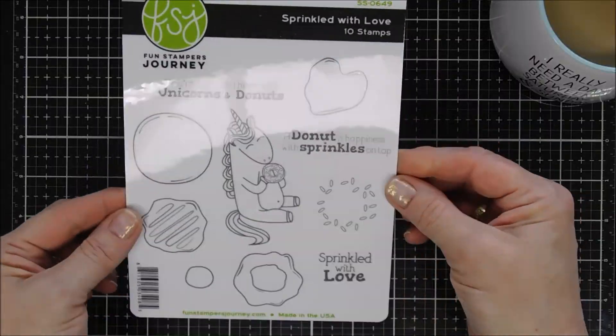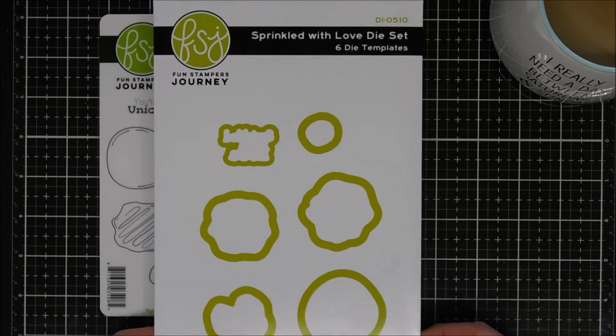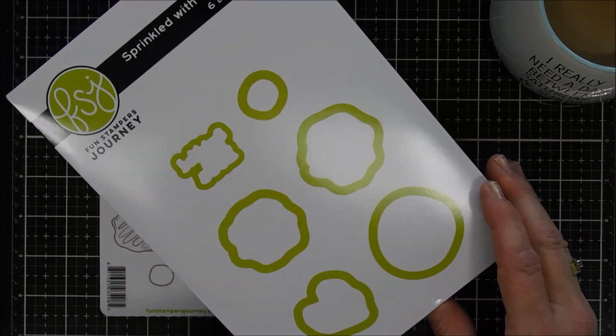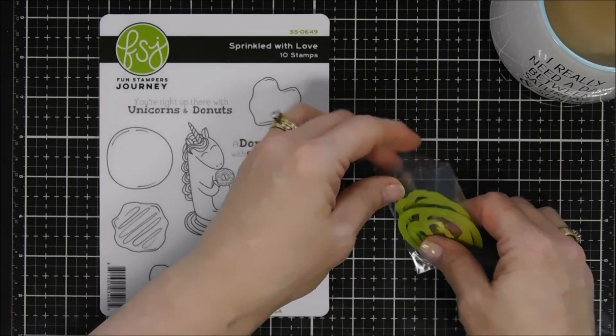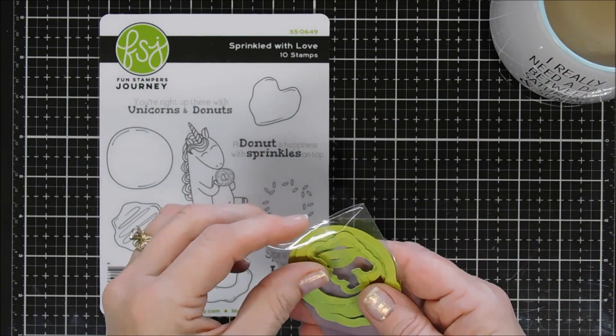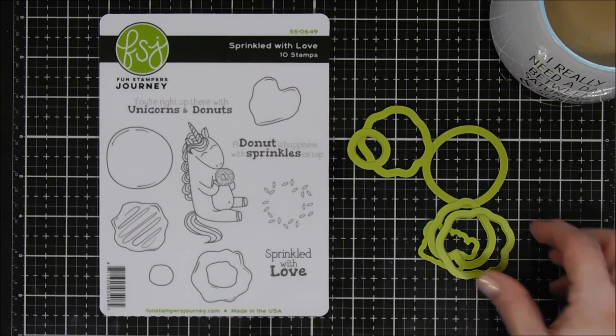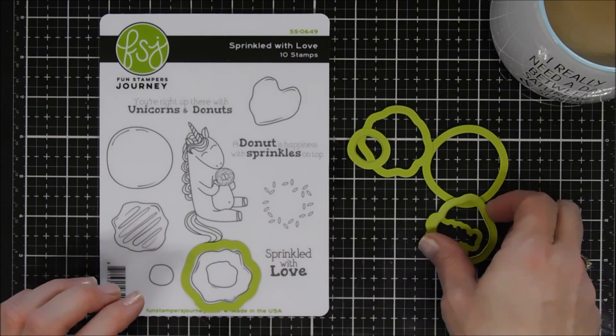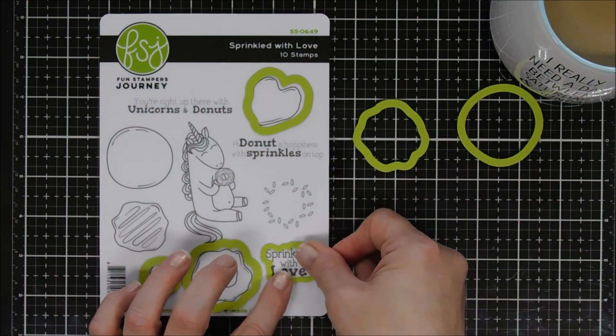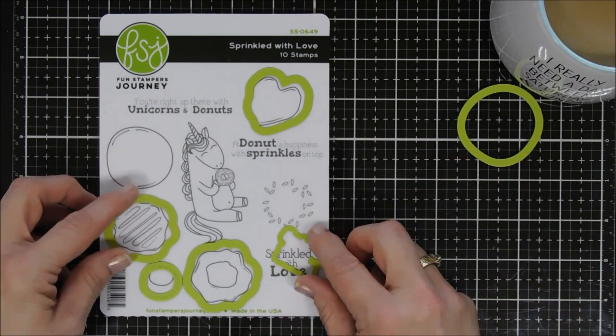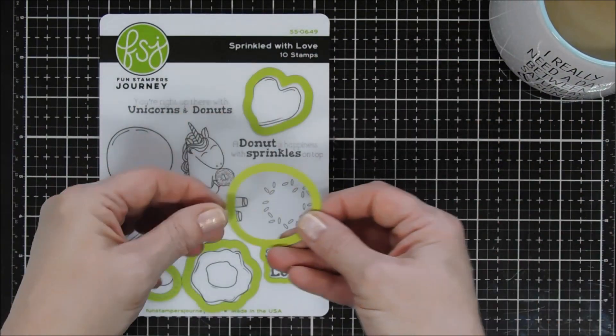I'll link it down below in case you're interested. Also this month there's coordinating dies. They're not part of the stamp of the month club kit, they're sold separately. It's a six-piece die set that coordinates with your stamp of the month club kit and it will cut out some of the frostings, the sentiment that says 'Sprinkled with love,' the donut hole, and also the donut base. So if you like layering your donuts, the dies are perfect for that.